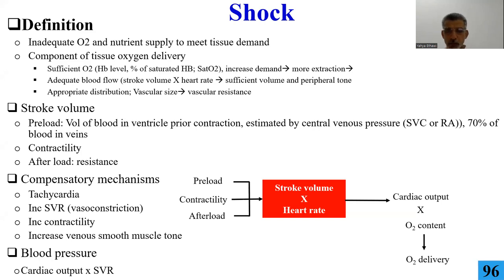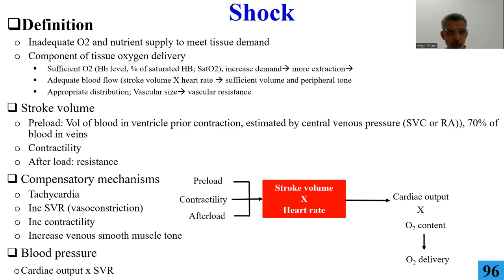Sometimes hemoglobin is low or oxygen is low, or the demand is higher than supply. You need good oxygen, good hemoglobin, and demand should be less than supply. You need good blood flow, which depends on stroke volume — the amount of blood ejected by the heart per cycle — multiplied by heart rate and divided by weight to get cardiac output. You also need appropriate vascular tone: systole reflects cardiac contractility and diastole reflects blood vessel collapsibility.